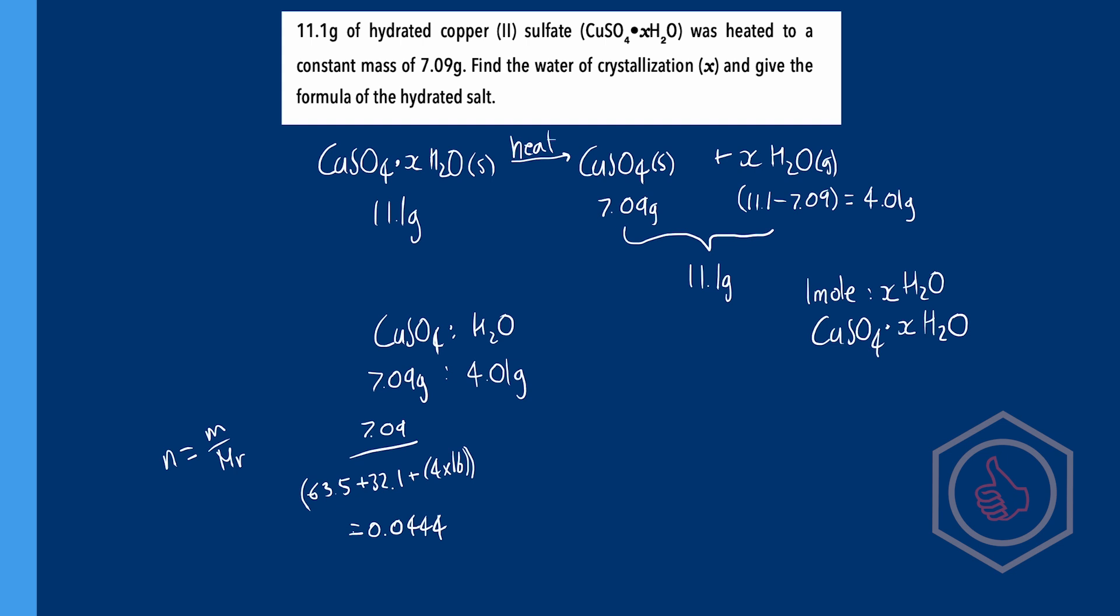Okay and now the same thing for water. 4.01 grams divided by 2 times 1 plus 16. 2 times 1 because we have two hydrogens in the formula and the relative atomic mass of hydrogen is 1, and plus 16 because we have one oxygen. This gives us moles of water of 0.222.